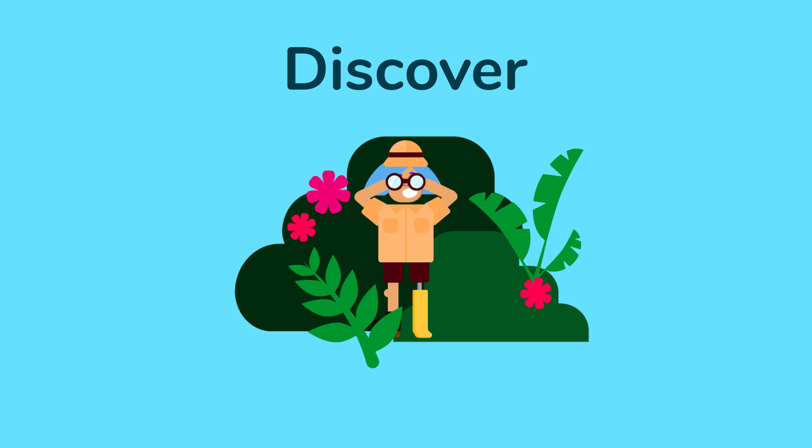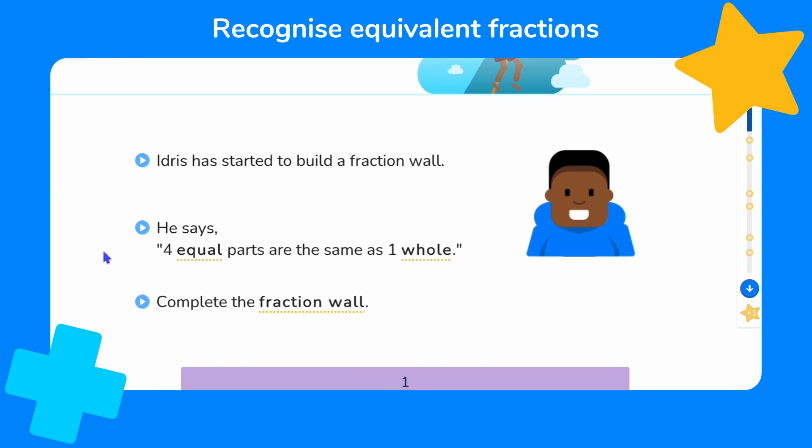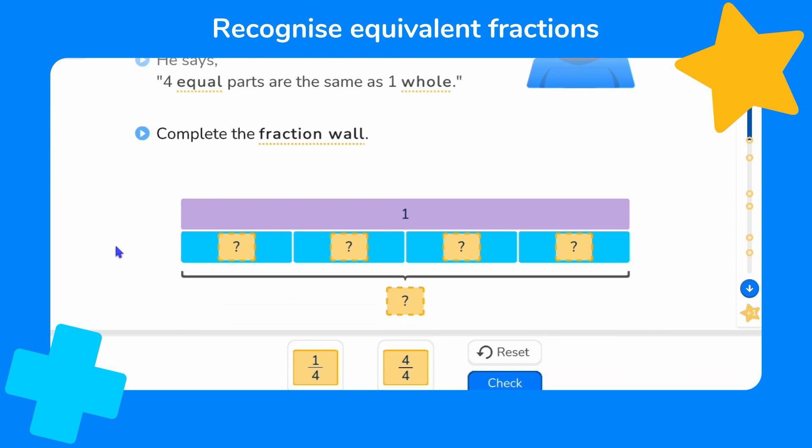Now we can discover how we can recognize equivalent fractions. Idris has started to build a fraction wall. He says four equal parts are the same as one whole and we're asked to complete this fraction wall. The fraction wall has some of its labels missing and we have two choices here. Looking at the fraction wall we can see that the whole has been divided into four equal parts.